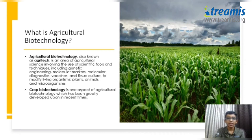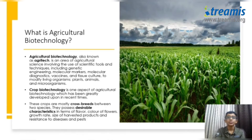To modify plants, we use crop biotechnology, which is a major aspect of agricultural biotechnology. We take two breeds of crops and crossbreed them with each other to obtain desirable characteristics such as flavor, color, growth rate, and size of harvested products.